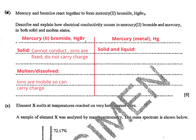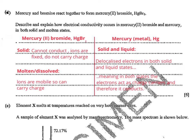Mercury is a metal like any other metal and has delocalised electrons in both solid and liquid states. The delocalised electrons can move around in both states — solid and liquid — so they can act as charge carriers, and the mercury conducts in both cases.